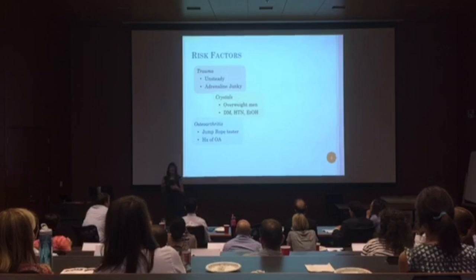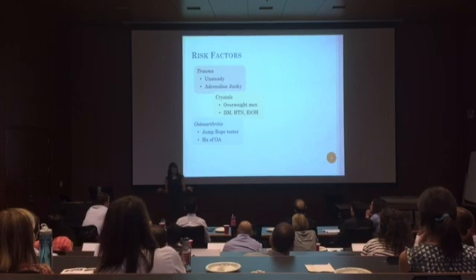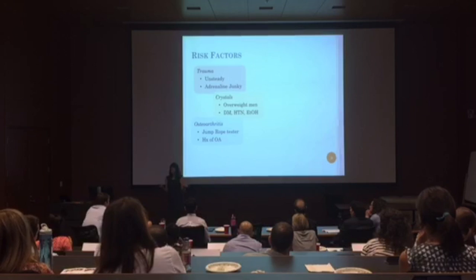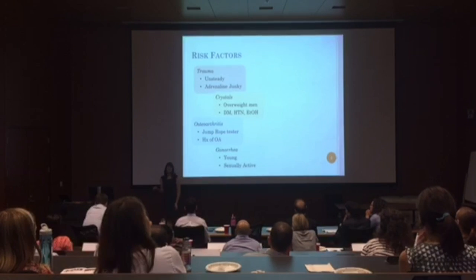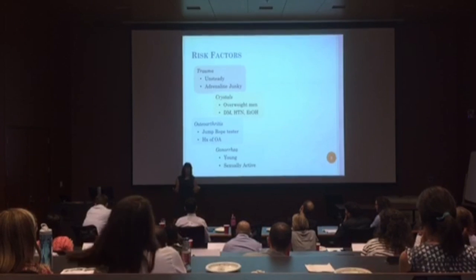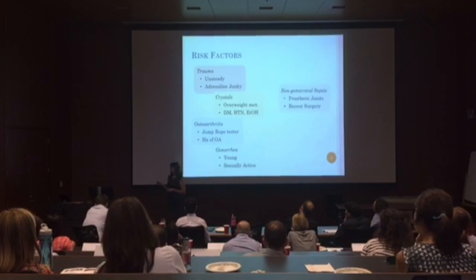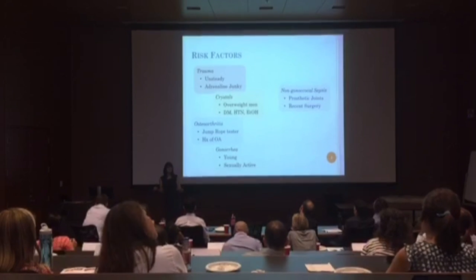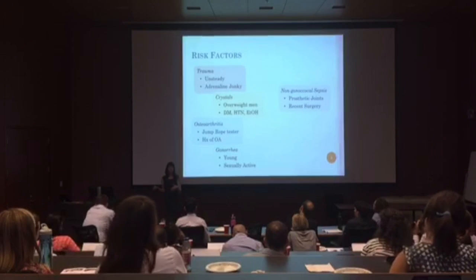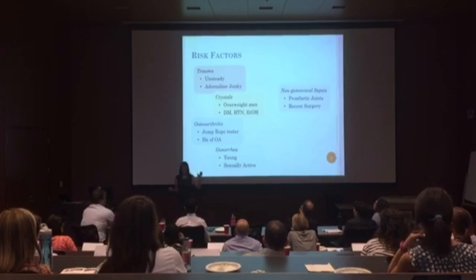For osteoarthritis, maybe they have a history of repetitive stress to their joints, or they've been diagnosed with osteoarthritis before. For gonorrhea, it's someone who would be young and sexually active — it's actually the most common cause of acute monoarthritis in that population. For non-gonococcal sepsis, they may have a prosthetic joint, recent surgery to the joint, or recent surgery to a prosthetic joint — all of which put them at very high risk.